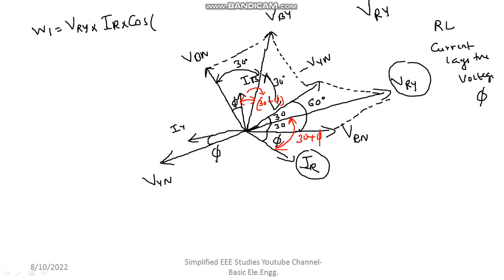Cos, what should I write? Cos 30 plus φ. So instead of VRY let me write VL, line voltage. VL into, instead of IR let me write IL, line current. Cos 30 plus φ. Please call it as first equation.